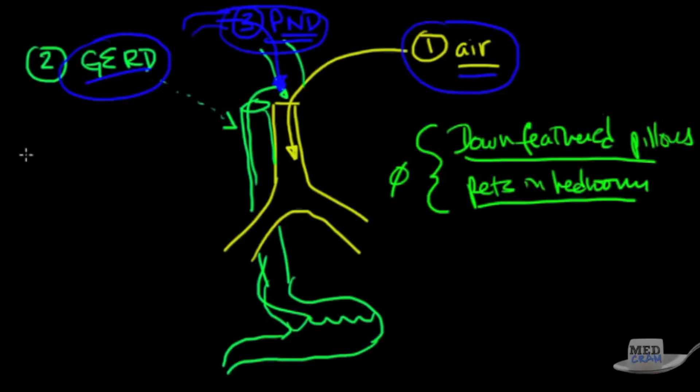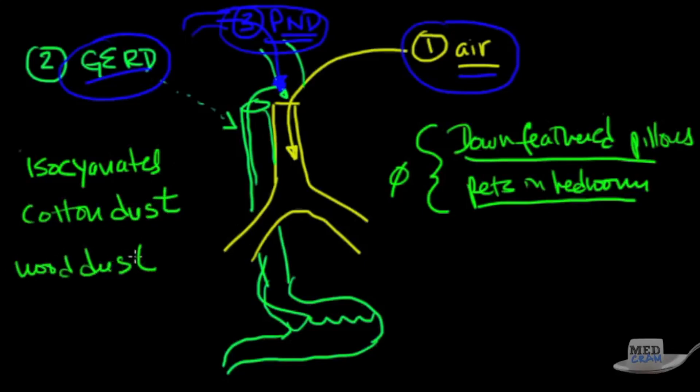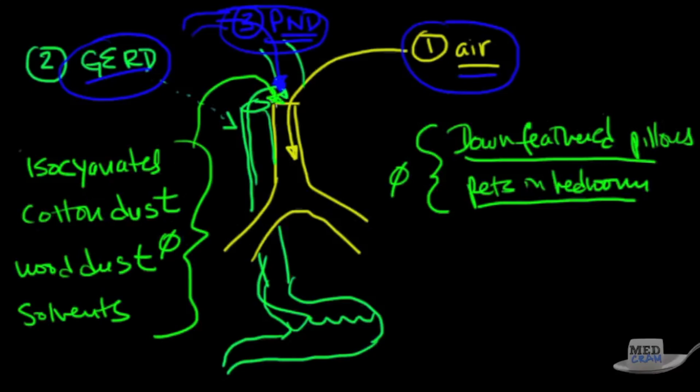There's also environmental things and things from work. For instance, from your occupation, there's something called isocyanates or cotton dust, wood dust, solvents. All of these things can, by breathing them in, set off asthma exacerbations.